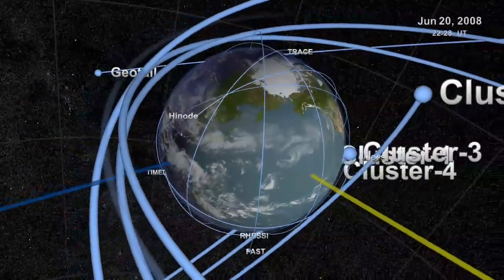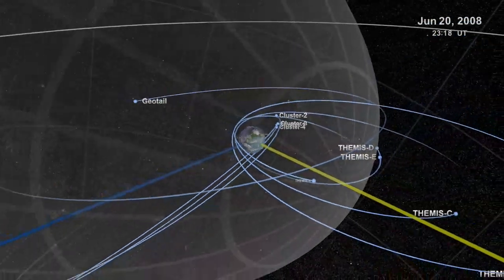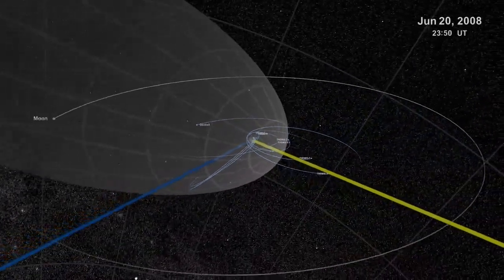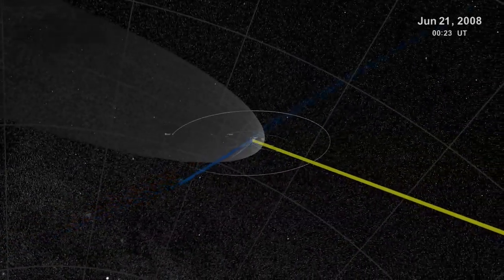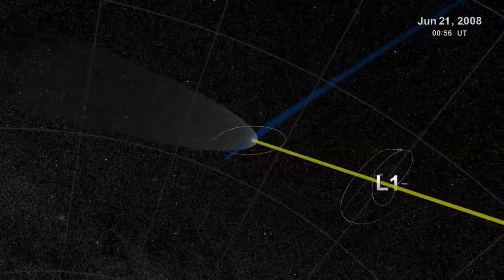Heliophysics studies how the sun's sphere of influence interacts with planets and the interstellar medium, the barely tangible stuff that fills what we typically regard as empty space.